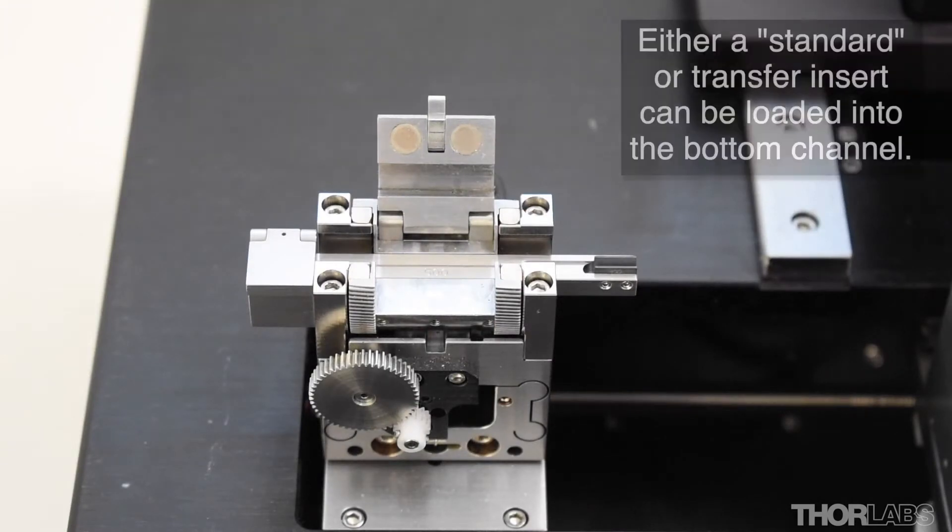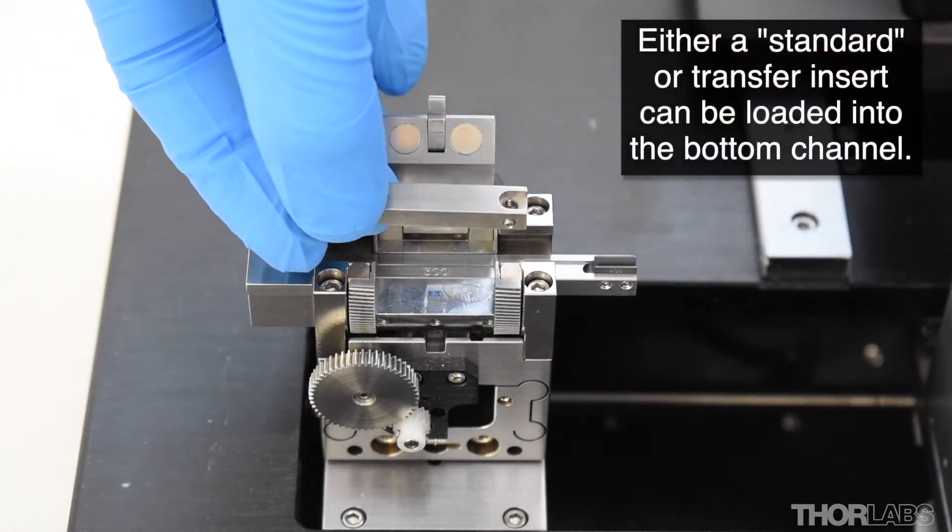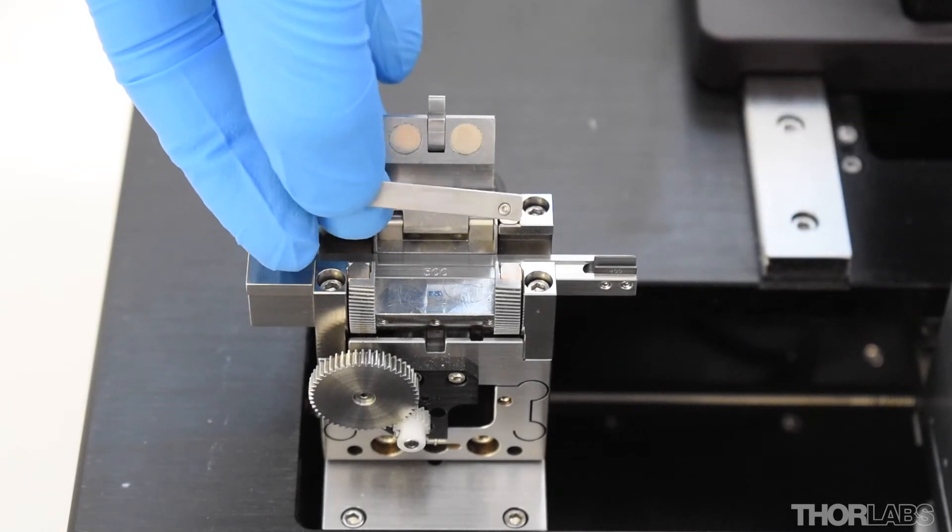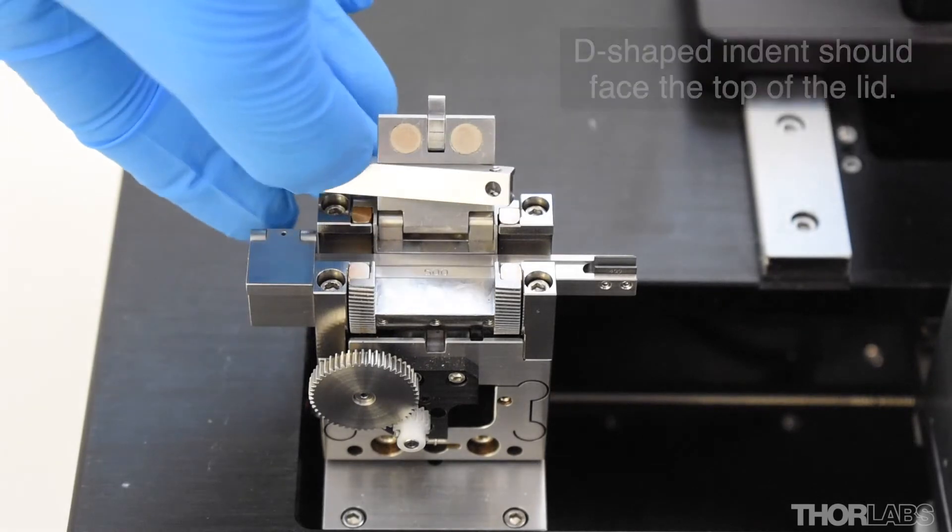With an insert loaded into the bottom channel of the fiber holding block, lift the lid and place the top insert partway into the channel of the lid, ensuring that the D-shaped indent will be facing upwards when the lid is closed.